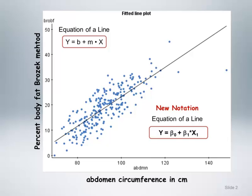All parameters in the model are represented as betas with numerically ascending subscripts. Beta 0 always represents the intercept. Beta 1 represents the slope associated with the independent variable being used to predict the dependent variable. This notation becomes very convenient when we generalize our models to include more than one independent or predictor variable. Each predictor in the model will have an associated slope that describes the linear relationship between the predictor and the outcome of interest.